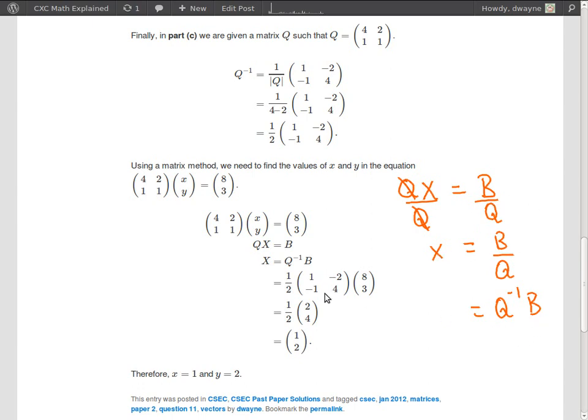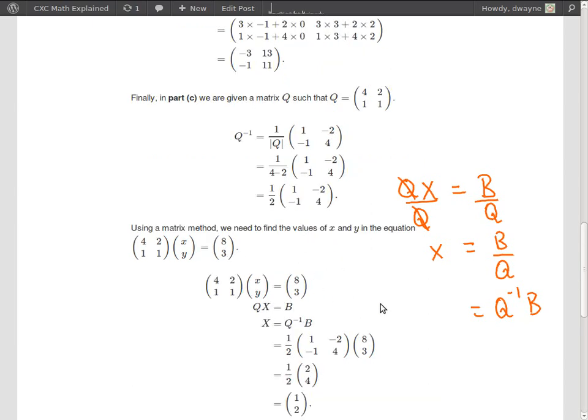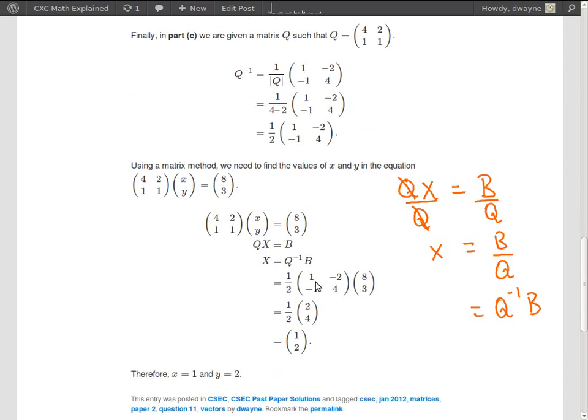Alright, so once we have X equal Q inverse times B, well, you already calculate what Q inverse is. It's this. So you plug that value in here and we know what B is. B is the column vector 8, 3. So it's just left to calculate this. So we need to multiply this matrix by this column vector. Let's see if they are compatible for multiplication.